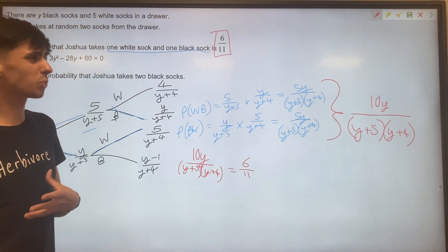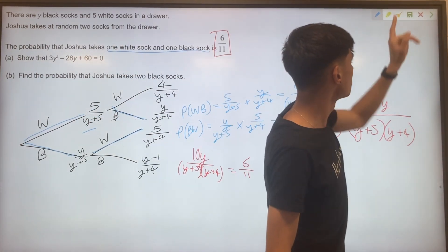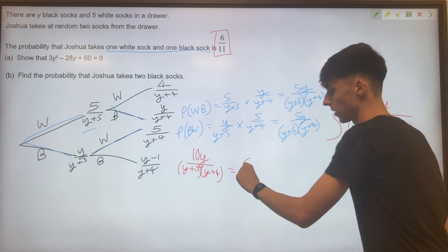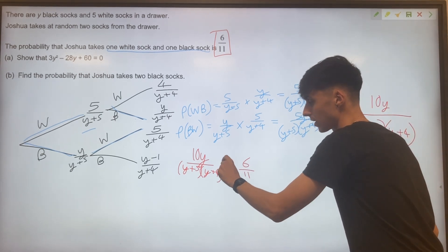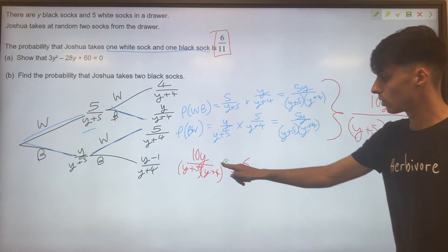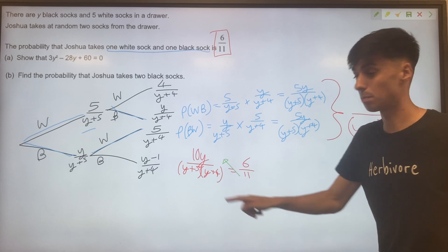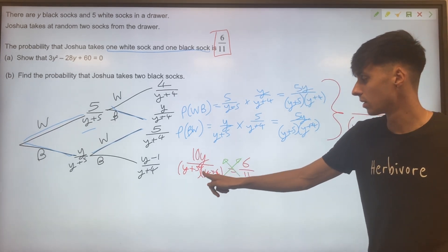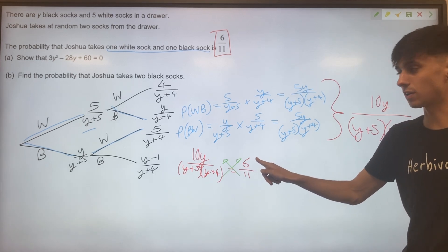And at this point, we're doing some sort of cross multiplication to get rid of our nasty fractions. So when we cross multiply this, we're going to multiply everything by 11, y plus five, and y plus four. And that gives us this effect of the 11 popping up over here, and the double brackets popping up over here.